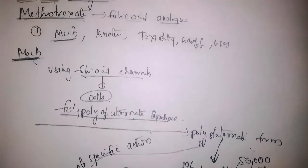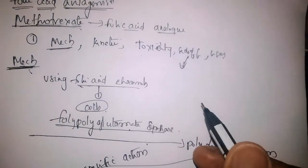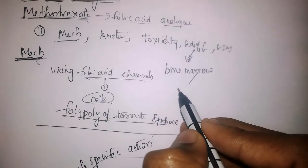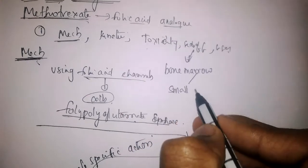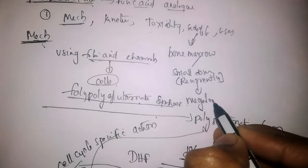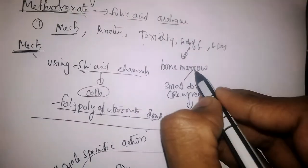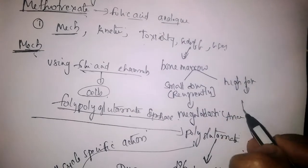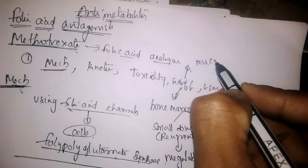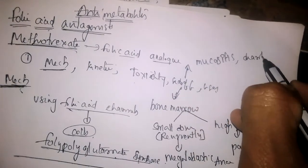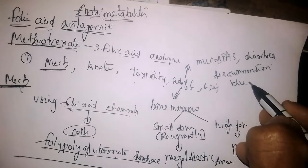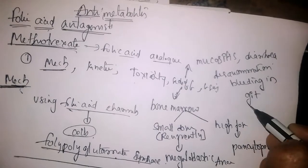Coming to side effects: methotrexate mainly affects the bone marrow. If given in small doses in a recurrent fashion, it results in megaloblastic anemia. If given in high doses, it results in pancytopenia. Other side effects include mucocytosis, diarrhea, desquamation, and bleeding in the GIT.